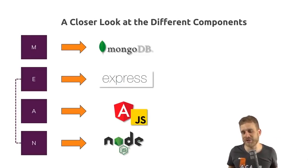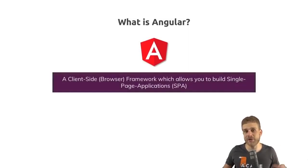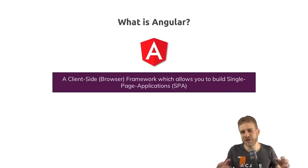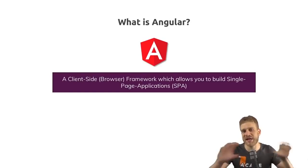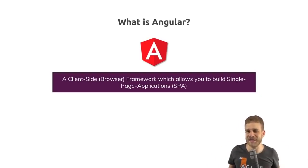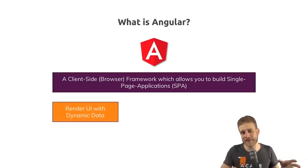Angular runs on the client side, in the browser. It's a framework building on JavaScript, used to create so-called single-page applications. This means it handles the entire frontend logic — everything your user is going to see. Angular is responsible for rendering the user interface with dynamic data. It's not just rendering static HTML and CSS; its job is to update the UI whenever we have new information, like when you create a new post.